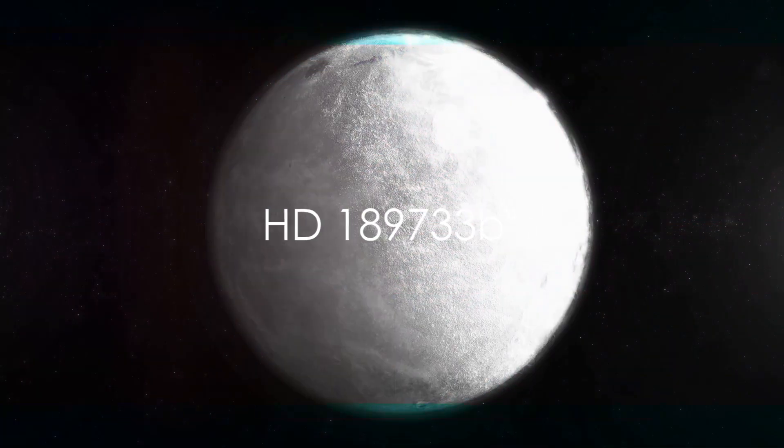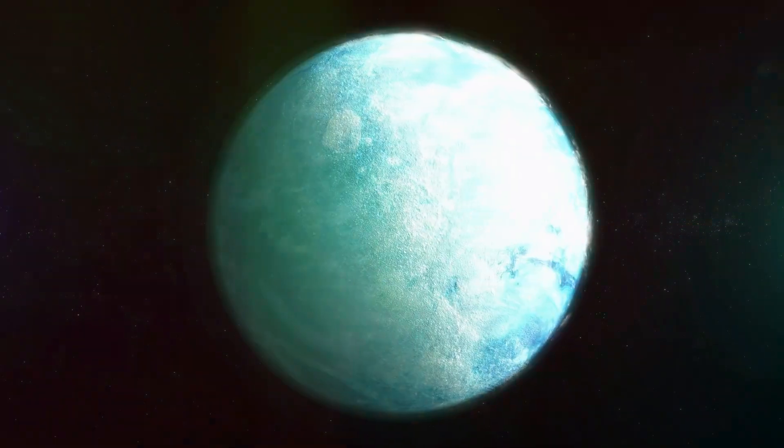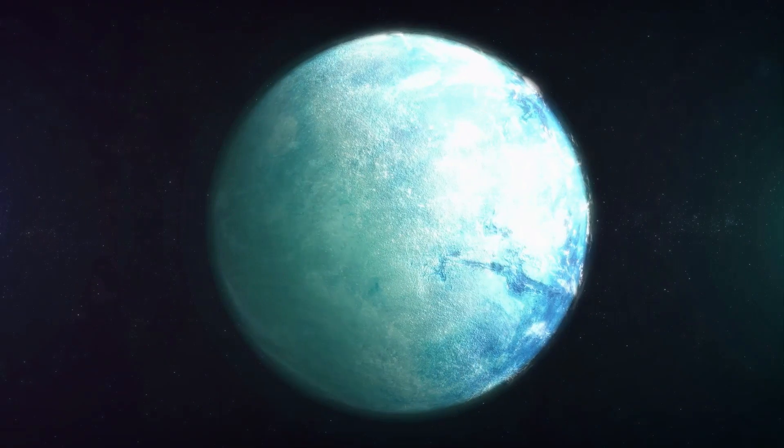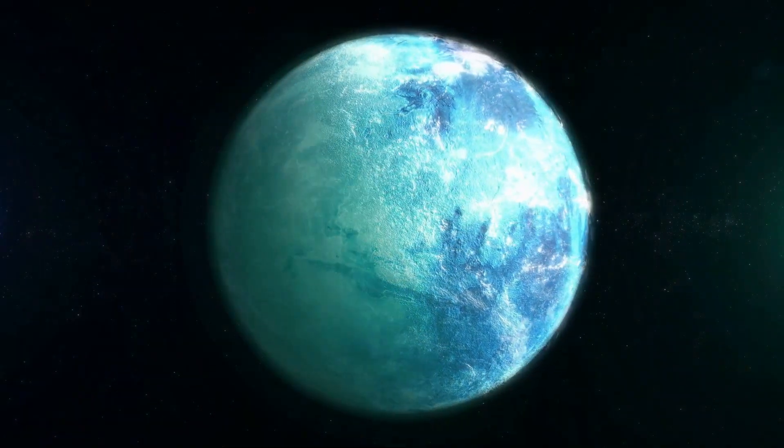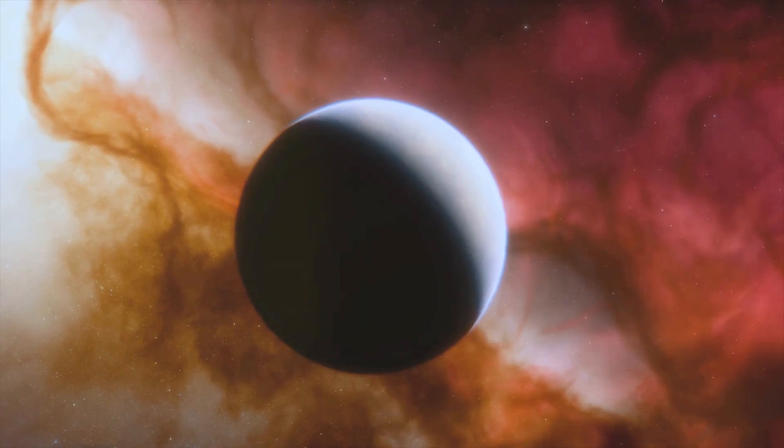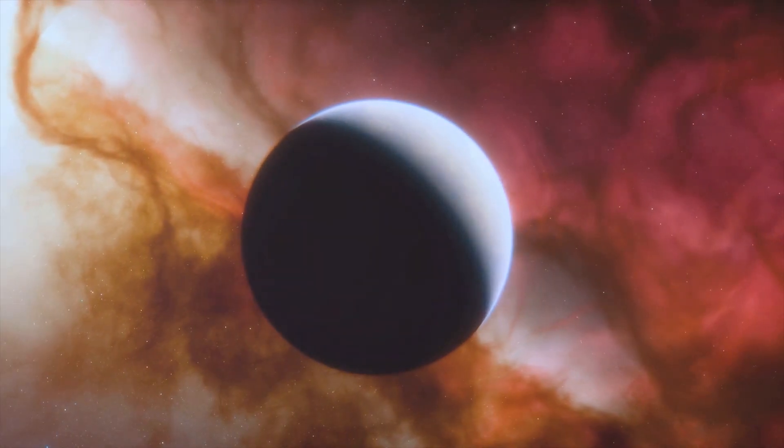Next up, at number 4, we have HD-189733b, a planet infamous for its deadly weather. Don't let its strikingly beautiful blue hue fool you, this isn't a tranquil vacation spot. The blue color comes from silicate particles scattering blue light. Similar to how Earth's atmosphere works, but here's the twist.